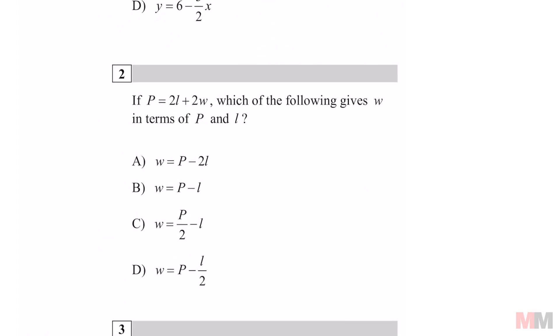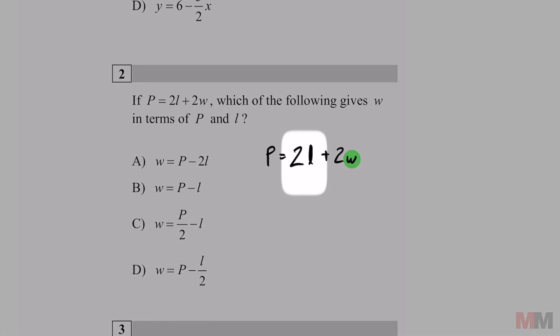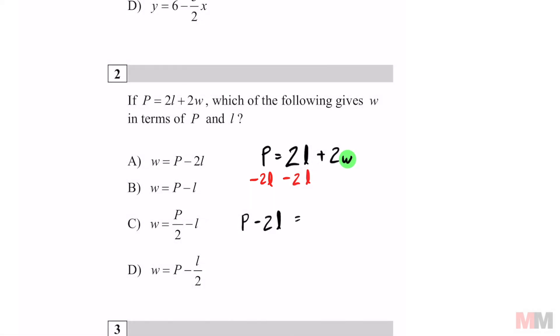Similar question. Solve for W and you can tell right away by just looking at the answer choices. Get rid of the 2L first, the one that's not even by the W by subtracting 2L just like that. If these two are not like terms, then just write them side by side just like this. Equals 2W.